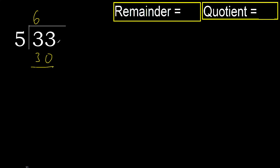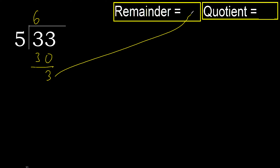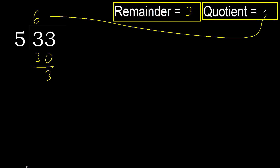Okay, subtract. 33 minus 30 equals 3. There is no next digit, therefore finish. The answer is 6 remainder 3.